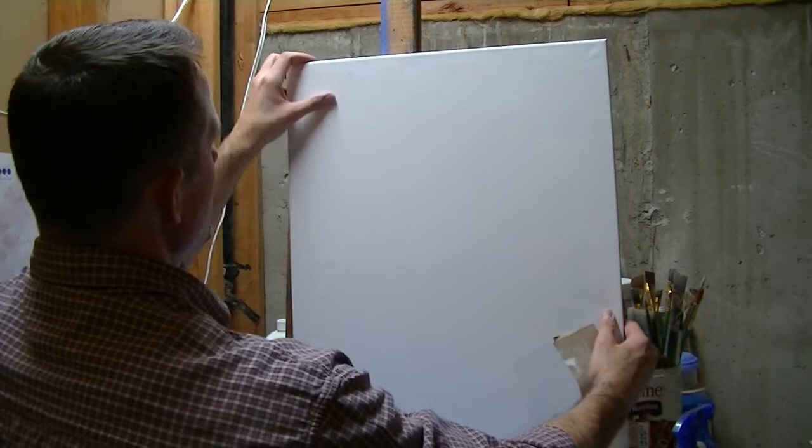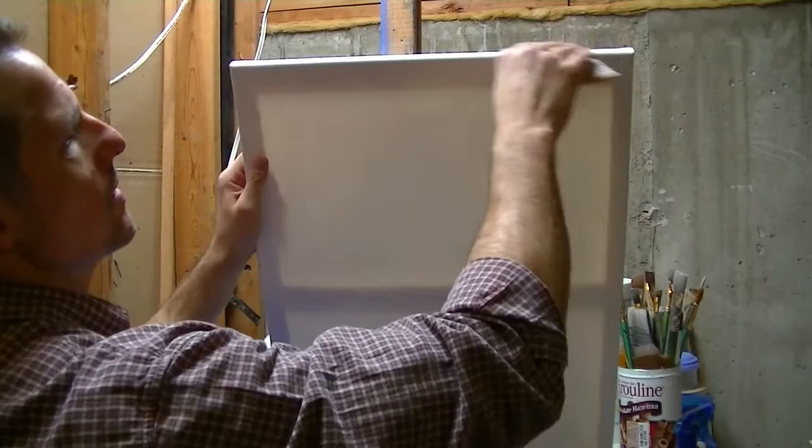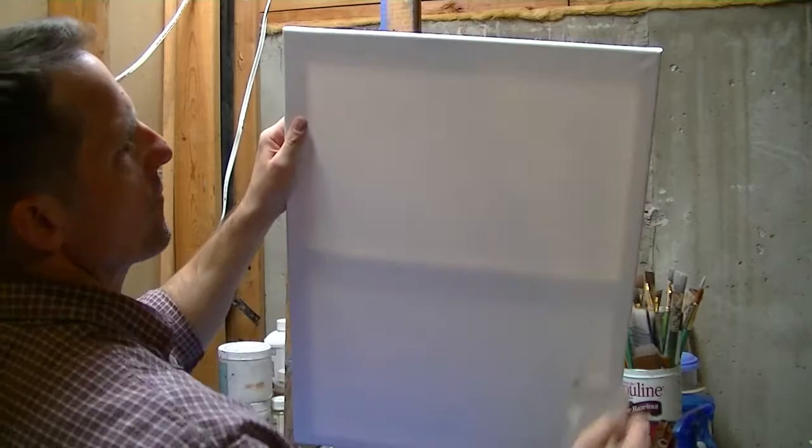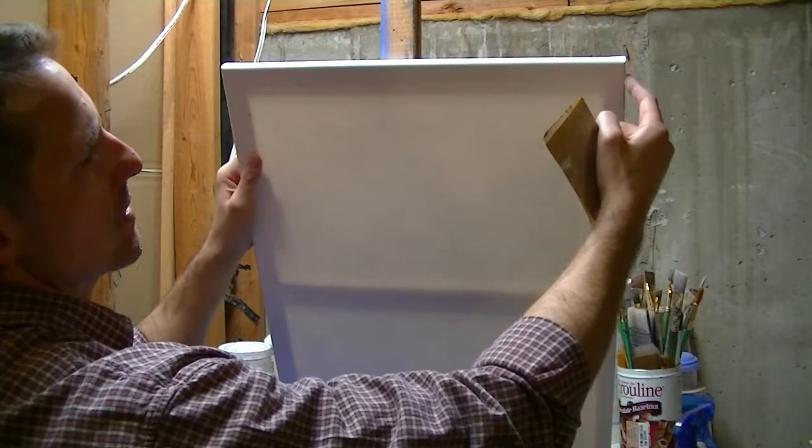So I'll go throughout my entire canvas and I will sandpaper it. I'll even sandpaper, cover the edges and the corners because typically if I'm not framing the painting, then I'll just paint the corners and edges with black gesso. That way it just looks a little nicer and more finished.